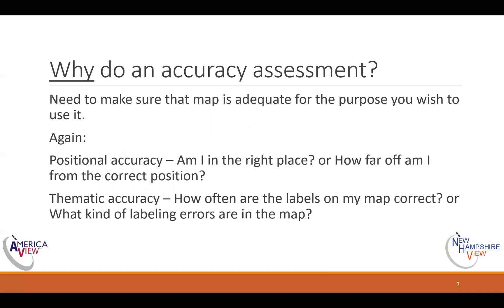The same applies to thematic accuracy: how often are the labels on my map correct? It says it's water — is it really water when you go there on the ground? If it's not, that could be a really big problem. If you're building a highway and don't know there's water there, that could be a problem — certainly added cost. What kind of labeling errors are there? Is it a simple case where it said deciduous forest but it's really mixed forest? That's not a big deal. But if it said it's a forest and it's actually a Walmart, that might be a bigger problem.